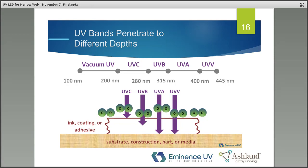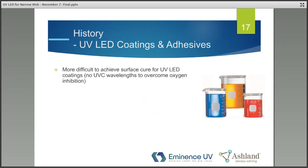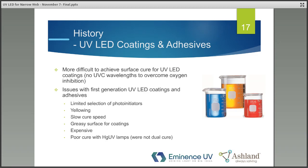UV-C cures very well at the surface and cuts through oxygen inhibition — oxygen inhibits cure — giving good surface cure. UV-B cures partway into the system, while UV-A and UV-Visible have good penetration depth but do not work well in the presence of oxygen. UV LED systems are all UV-A, so you lose the UV-C ability to cure at the surface. This made it more difficult with early UV LED coatings and adhesives to get good surface cure due to oxygen inhibition, resulting in limited photo initiator selection, frequent yellowing, slow cure speeds, greasy surface feel on coatings, high cost, and no dual-cure capability.